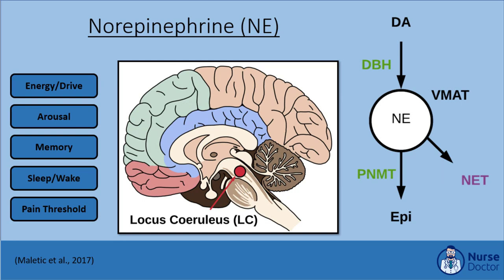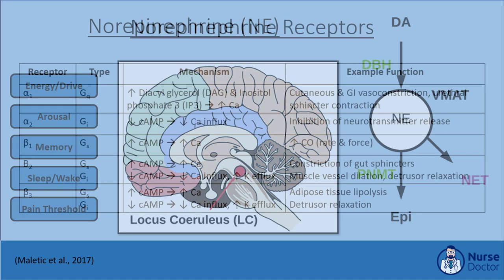The final monoamine we will discuss is norepinephrine, synthesized in the locus coeruleus of the midbrain. Dopamine is converted into norepinephrine under the influence of dopamine beta-hydroxylase (DBH). Norepinephrine is degraded by phenylethanolamine N-methyltransferase (PNMT) into epinephrine. Reuptake can occur via the norepinephrine transporter (NET). Key areas that norepinephrine influences include energy or drive, arousal, memory, sleep-wake, and pain threshold.